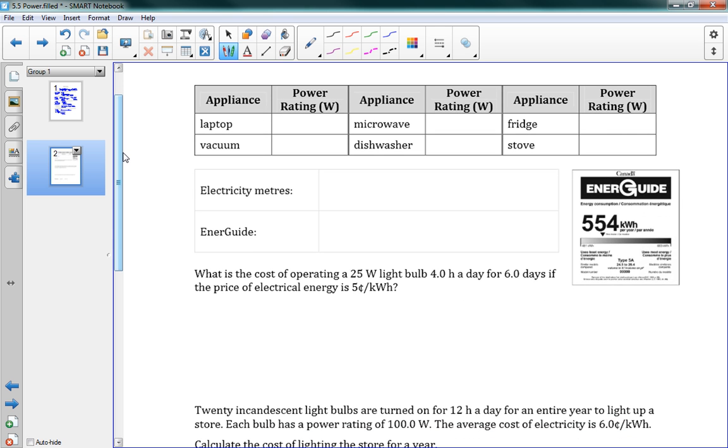On the next page, you'll see that we have a few common appliances to give you an idea of how much power all these different devices use. A laptop is 20 to 75 watts. A vacuum cleaner is 200 to 700. A microwave is 600 to 1,500. A dishwasher is 1,200 to 1,500. A fridge is 100 to 500. And a stove is 6,000 to 10,000. You don't need to memorize these, it's just to give you an idea.